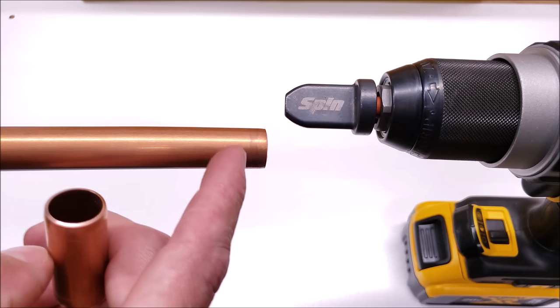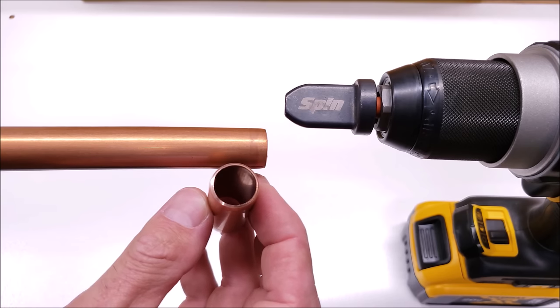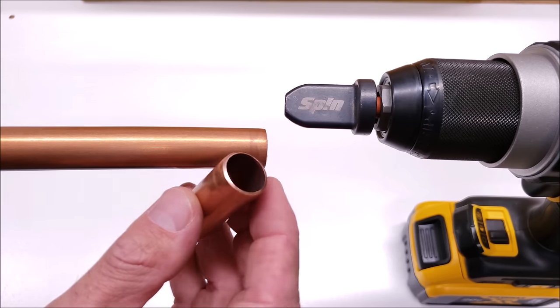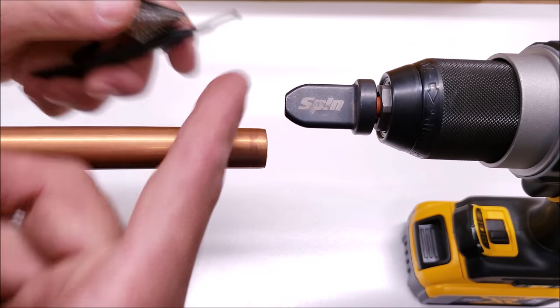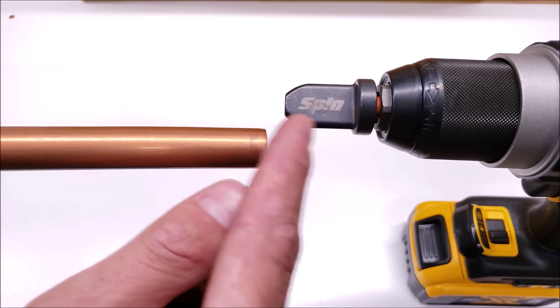This is 3/4 OD soft copper, also known as 3/4 ACR tubing. On the end we haven't reamed it. Now you could ream it with a unibit or a stick reamer, but this spin tool is going to be able to ream the copper tube for you during the process.